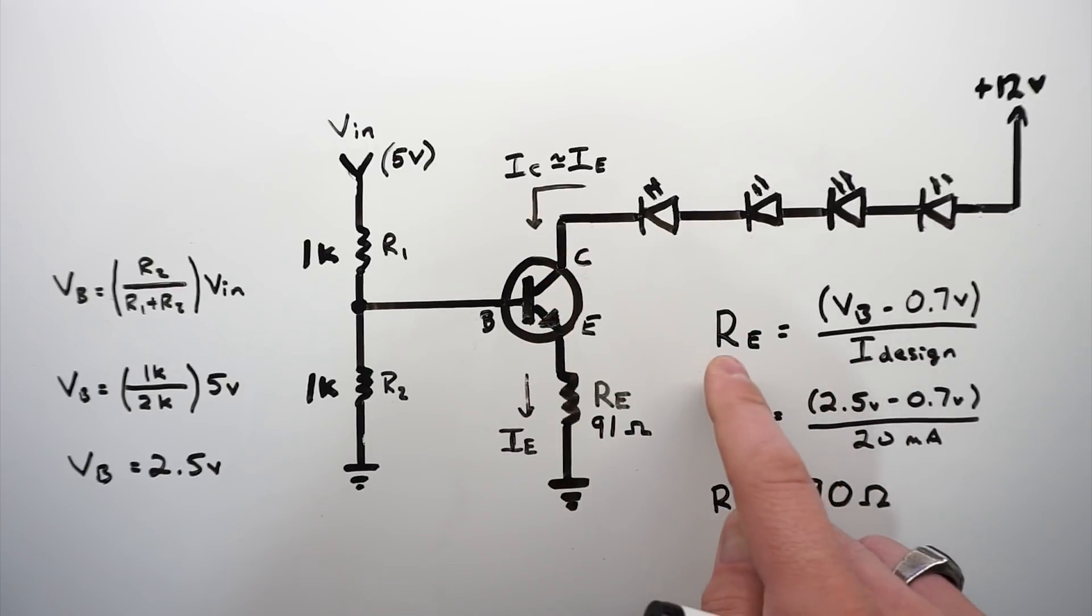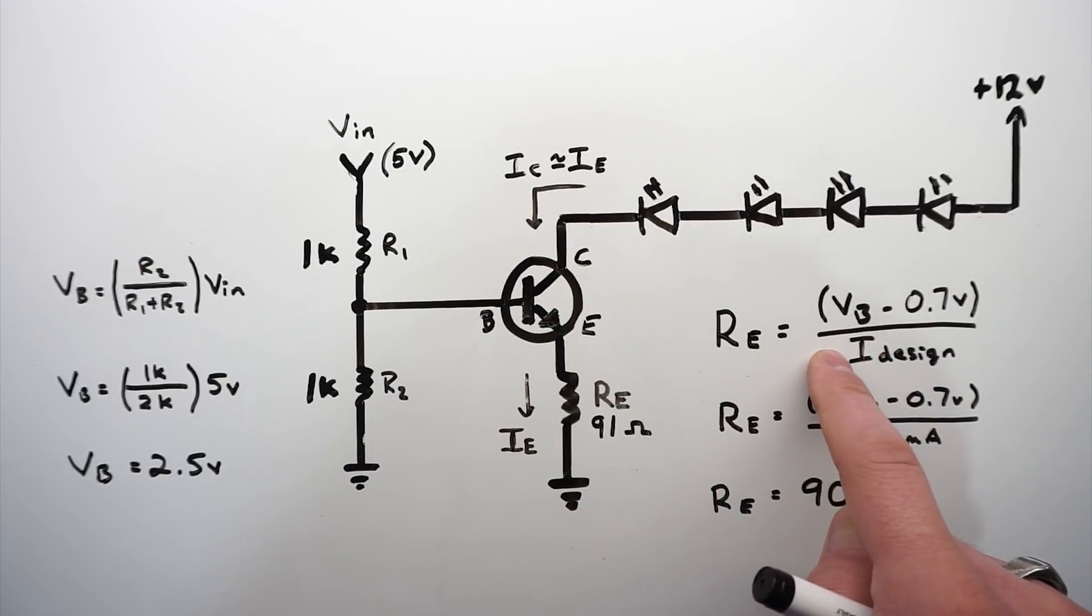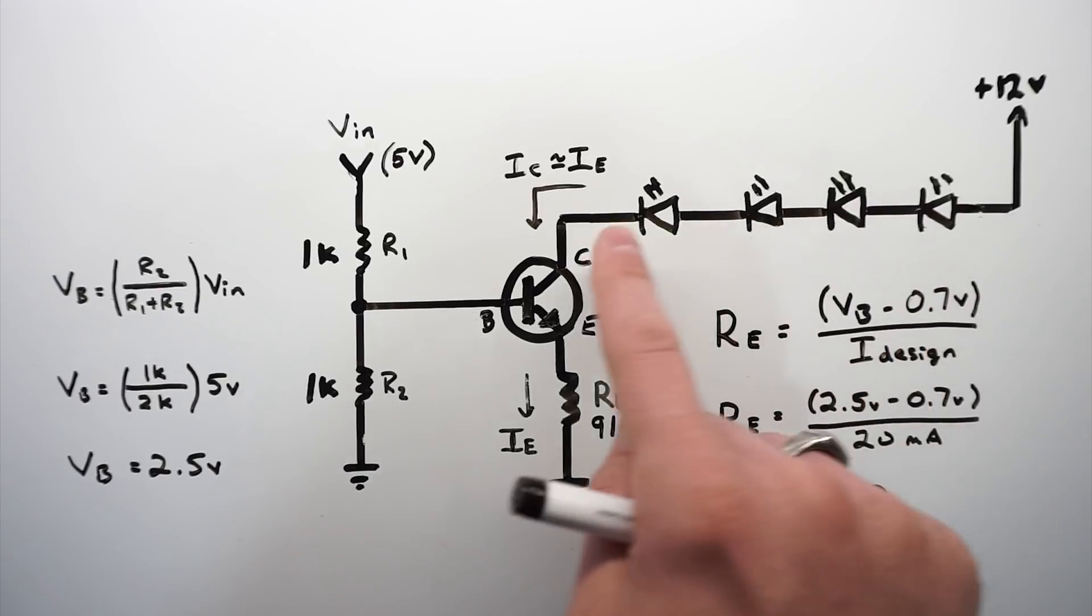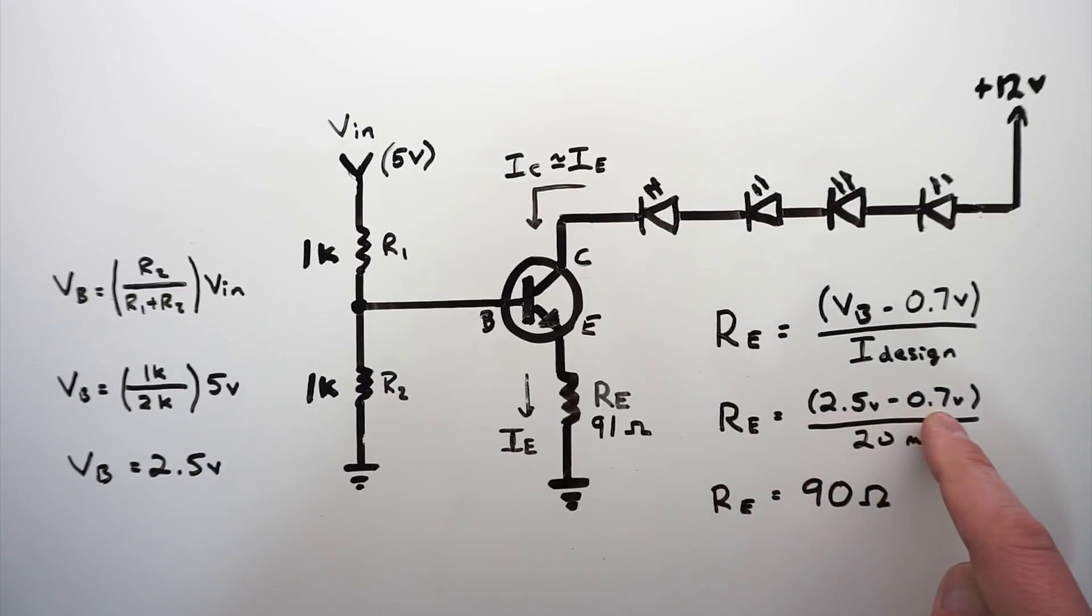Now we want to solve for our emitter resistor that allows 20 milliamps to flow through our collector-emitter junction. And that's pretty easy. Using Ohm's law, resistance is equal to voltage divided by current. So we take our base voltage and subtract our 0.7 volts and divide it by our design current that we want flowing through this leg. So that becomes 2.5 minus 0.7, which is 1.8. Divide that by the 20 milliamps we want, and we end up with an emitter resistor value of 90 Ohms. Now 90 Ohms isn't really a standard value, but 91 Ohms is. I happen to have that in my resistor drawer. So we're going to put this into our breadboard, all of this stuff, and we're going to make this thing run. So now that we've talked about all of this, let's go over to the breadboard.